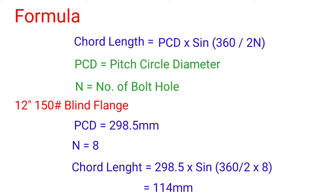PCD equals pitch circle diameter. N equals number of bolt holes. So our sample 12 inch 150 class blind flange - we know PCD value 298.5 mm. Number of holes also we know: 8.